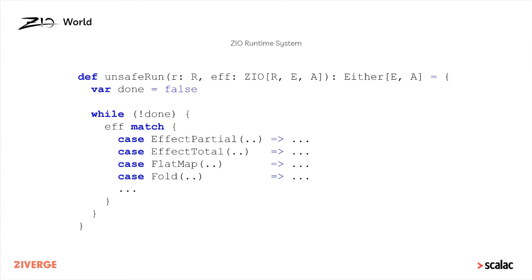I'm going to show you a model for the ZIO runtime system that's not actually accurate but is useful from a pedagogical perspective. In this model you have a method called unsafeRun — you give it the environment and the effect and it gives you back either the E or the A. What it does is just loop: it has a while loop in there and loops until it's done, matching against each of these terms and executing them.